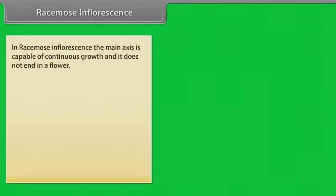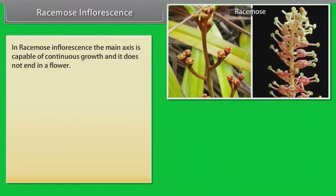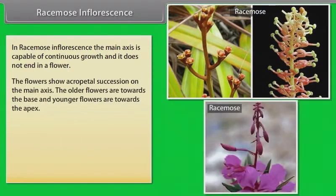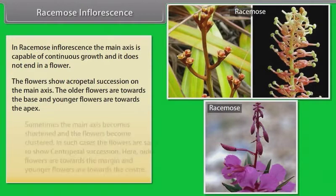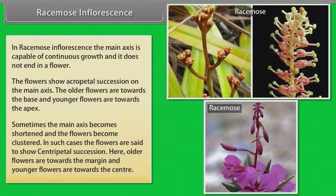In racemose inflorescence, the main axis is capable of continuous growth and it does not end in a flower. The flowers show acropetal succession on the main axis — older flowers are towards the base and younger flowers are towards the apex. Sometimes the main axis becomes shortened and the flowers become clustered; in such cases the flowers show centripetal succession, where older flowers are towards the margin and younger flowers are towards the center.